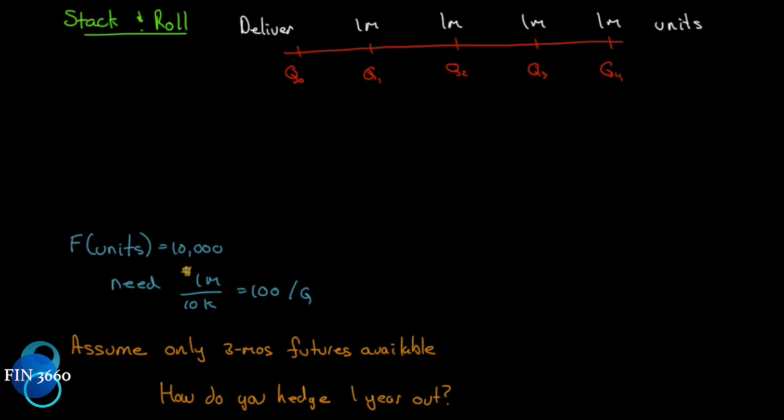And here's how that works. On day one, since we're delivering one, two, three, four million units, and every million unit requires 100 contracts, we will short 400 contracts on day one. We will short 400, knowing that they'll all expire here. Here's where they expire. But we want to hedge out all the way down here.